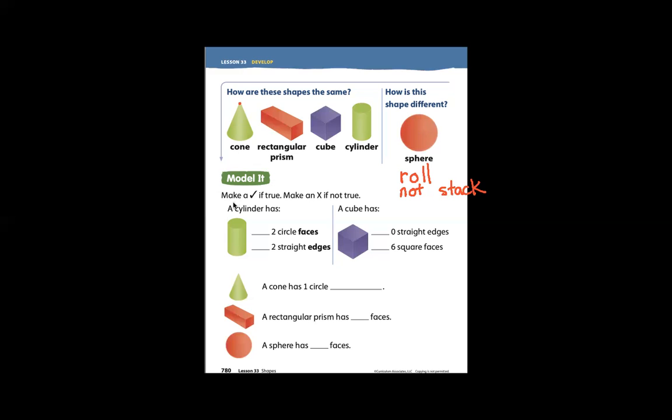Model it. Make a check if it is true. Make an X if it is not true. A cylinder has two circle faces.